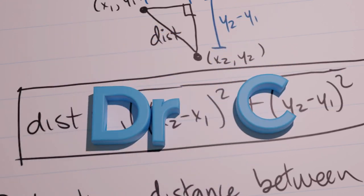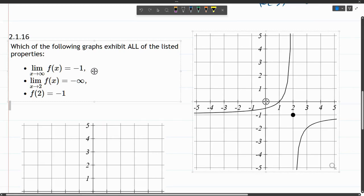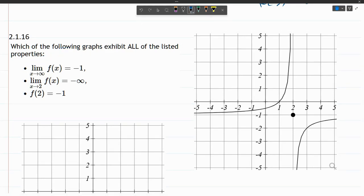In this problem, we're trying to match which graph has certain properties. Most of these properties are limit properties. Let's look at the one property that's not a limit property - the one on the bottom. What we need to do for the third one is just take two and plug it into f.